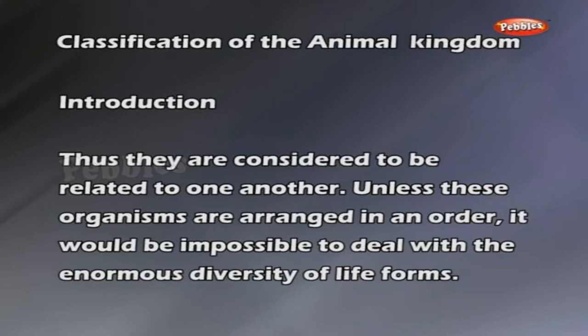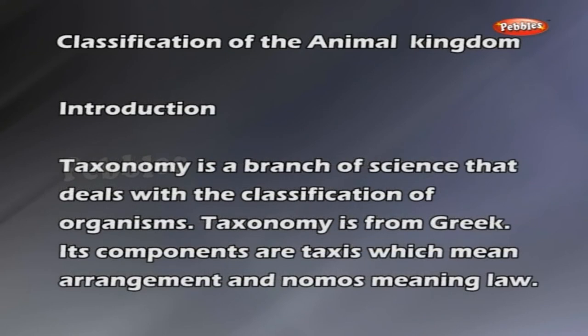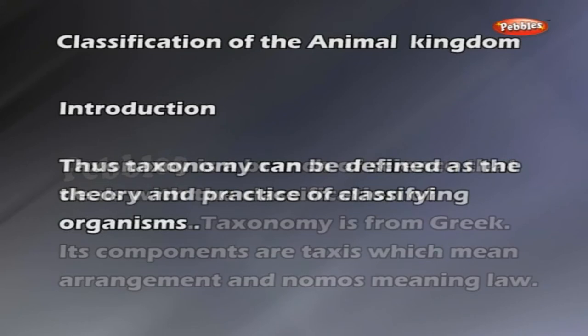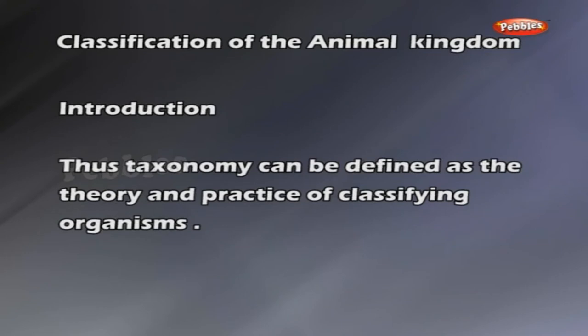Taxonomy is a branch of science that deals with the classification of organisms. Taxonomy is from Greek. Its components are taxis, which means arrangement, and nomos, meaning law. Thus, taxonomy can be defined as the theory and practice of classifying organisms.